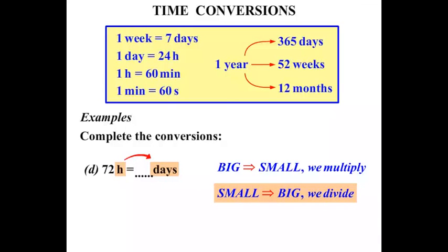We divide by that 24. So we have 72 divided by 24. In other words how many times does 24 go into 72? It goes in 3 times. So 72 hours is the same as 3 days.